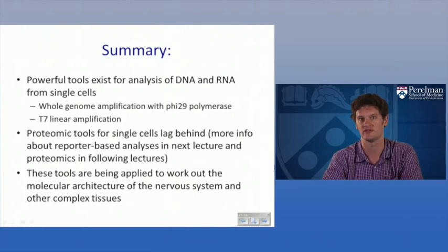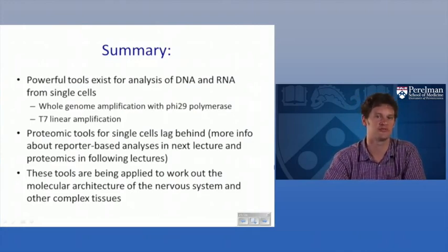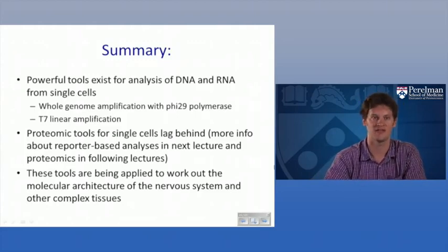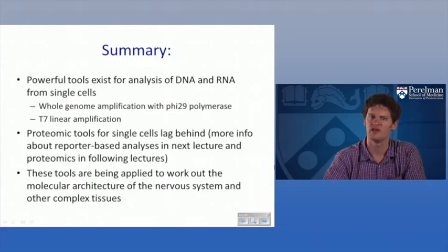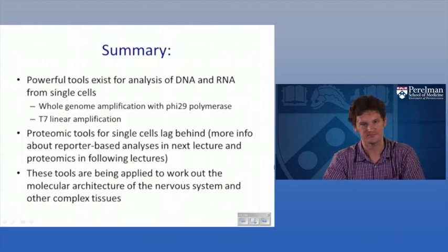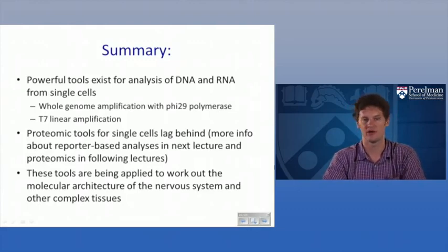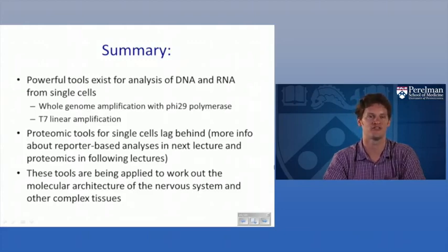To summarize the single cell genomics lecture: there are really powerful experimental tools to analyze both DNA and RNA populations from single cells. We talked about phi29 polymerase as a way to amplify genomes of individual cells, and T7 linear amplification — Eberwine amplification — as probably the most powerful way to amplify transcriptomes of individual cells. Single cell proteomics approaches exist but are limited to the most abundant proteins or specific tagging approaches. These approaches are powerful for working out differences in cell fate and how those arise in the nervous system and other complex tissues.